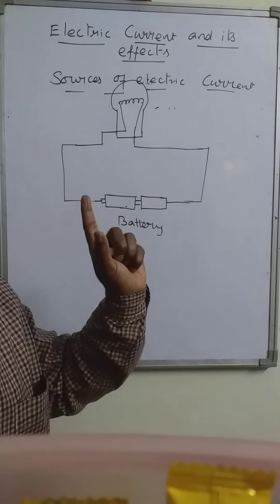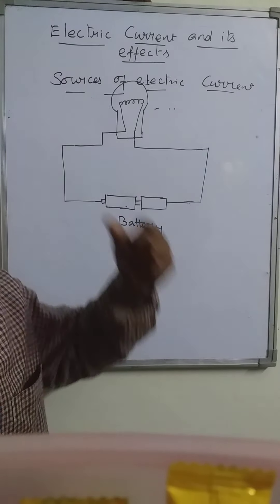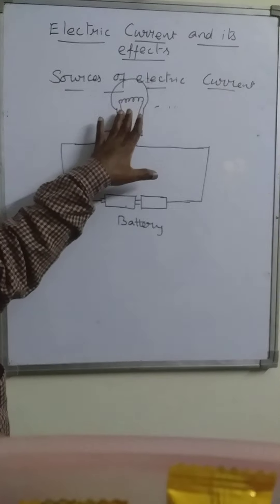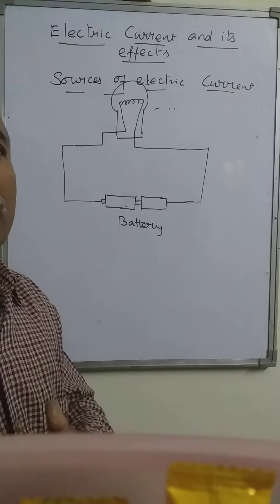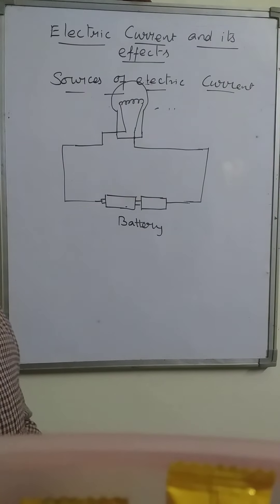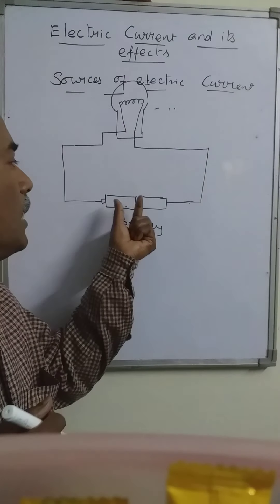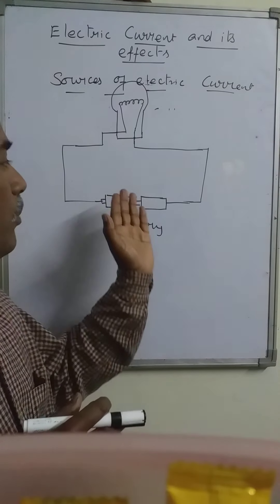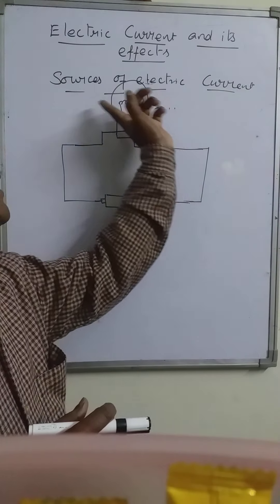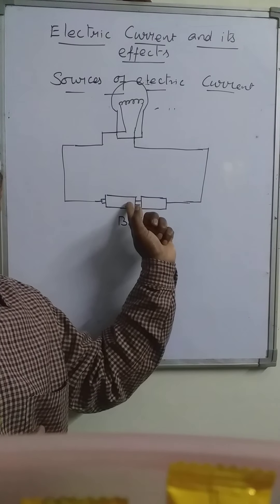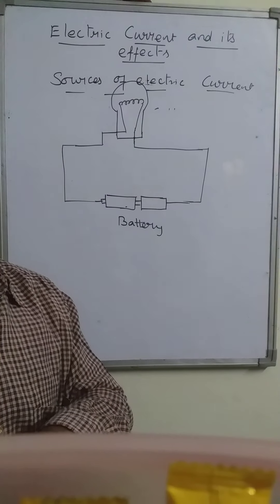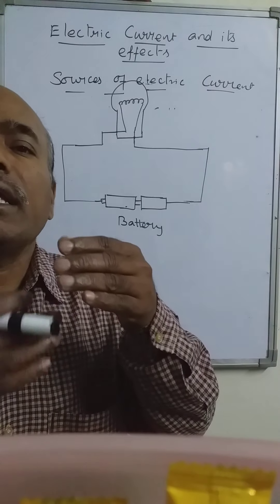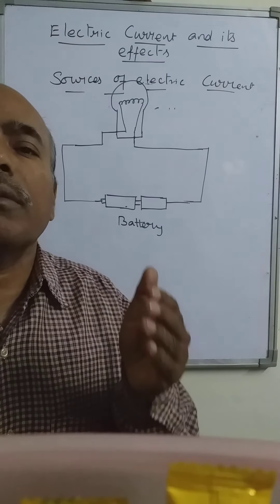So here we have two components: one is the cell or battery, and another one is the bulb. Now, if we connect this battery and the bulb together and the current flows continuously, the energy stored inside the battery decreases — because to make the bulb glow, electrical energy is supplied from the cell. So the energy stored in it is continuously decreasing, and at last the total energy stored inside is exhausted completely. Then we say the cell or battery is discharged.